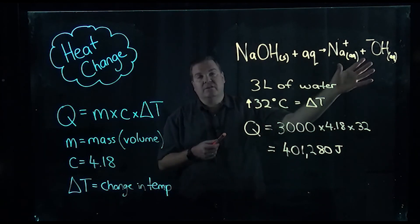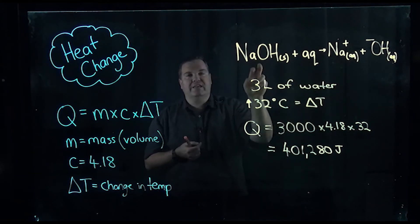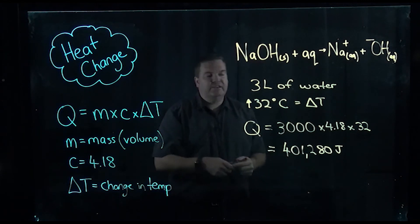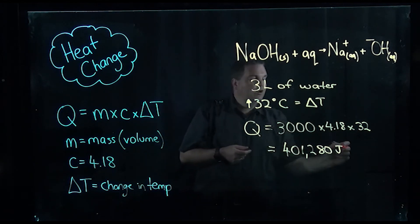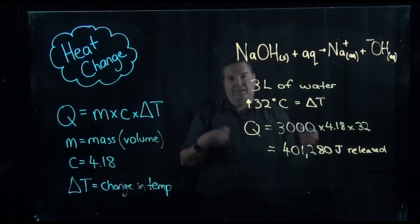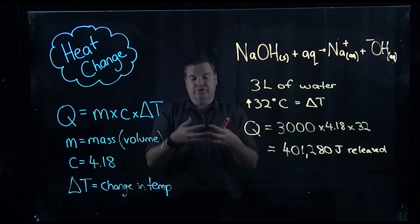Exothermic reaction is where the energy that is given out by these ions being surrounded or hydrated is greater than the energy taken in to break them apart. So for this one we say that there was 401,280 joules of energy released, and it was released in the form of heat.